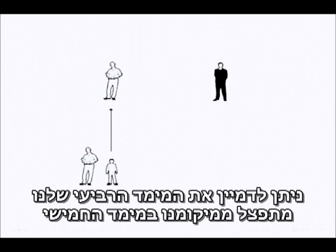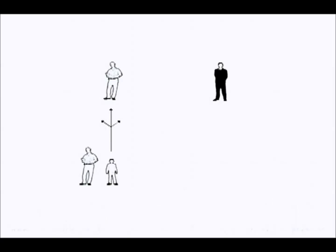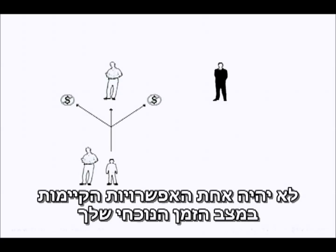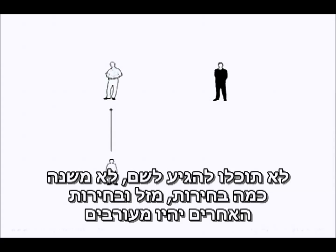We can imagine our fourth dimensional selves branching out from our current moment into the fifth dimension. But no matter where you go from here, the great child inventor timeline is not one of the available options in your current version of time. You can't get there from here, no matter how much choice, chance, and the actions of others become involved.